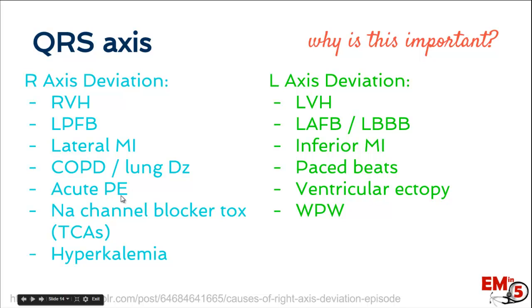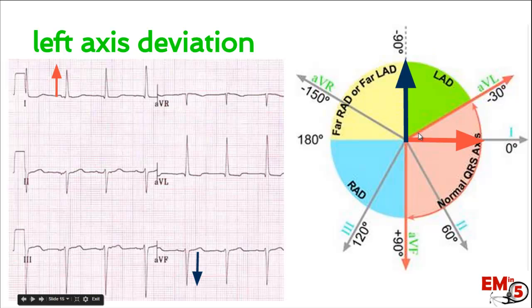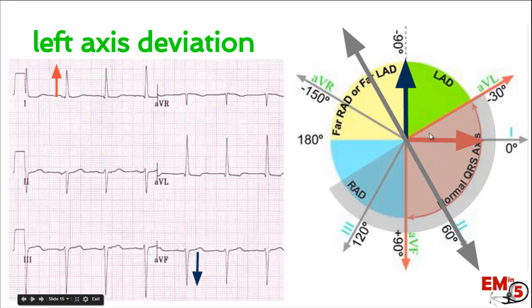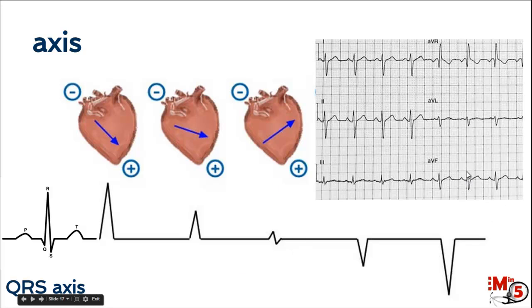One other thing to keep in mind is sodium channel blocker toxicity — for example, TCA toxicity. Now let's look at left axis deviation, which is a little trickier because this quadrant is divided. We have a positive wave in lead 1 and a negative wave in lead AVF. That means we need a third lead: lead 2. Positive in lead 2 means anywhere in one half of the circle; negative would be the other side. On this EKG example, we have a negative in lead 2, meaning left axis deviation. If a wave is neither positive nor negative — isoelectric — it's going exactly 90 degrees across.